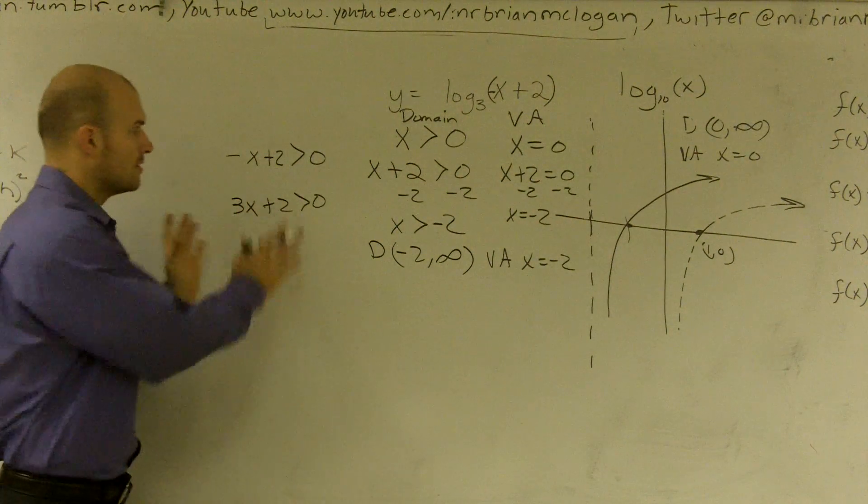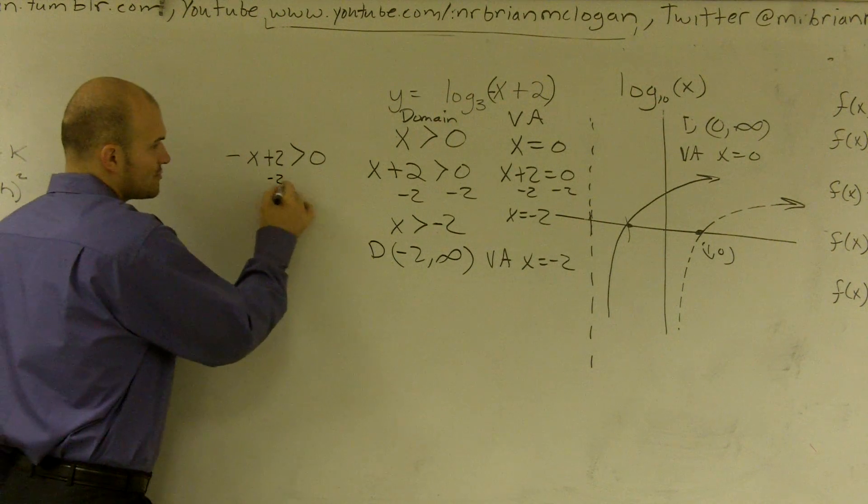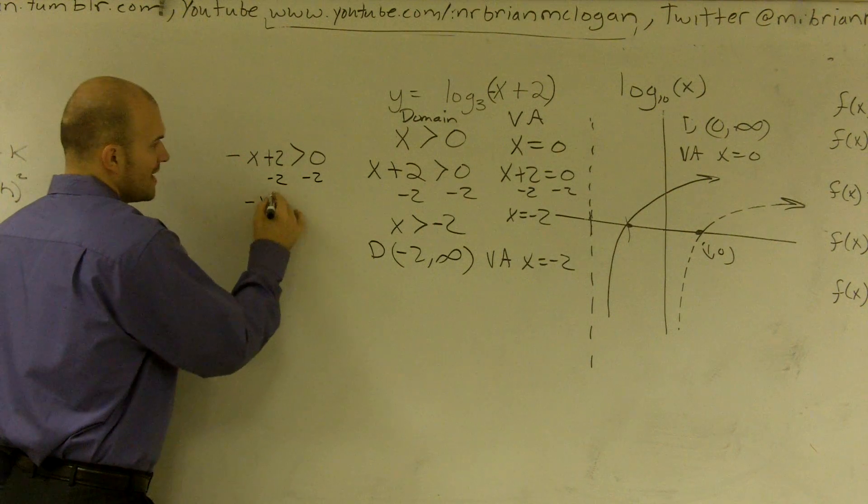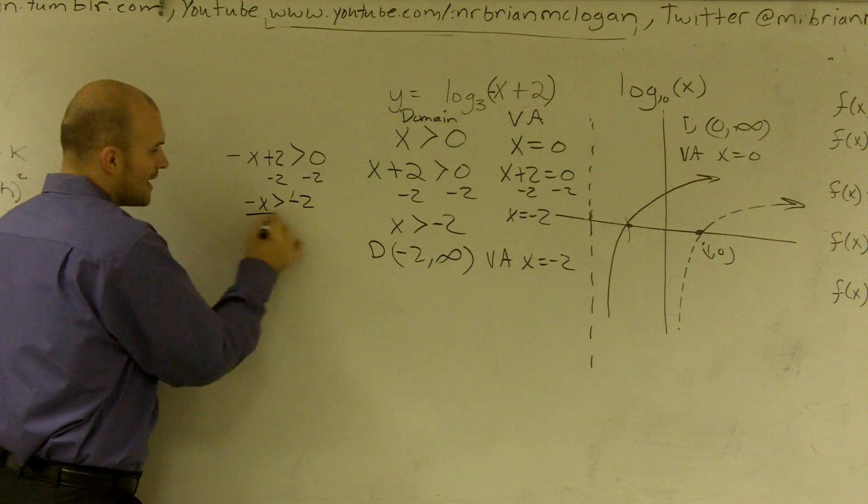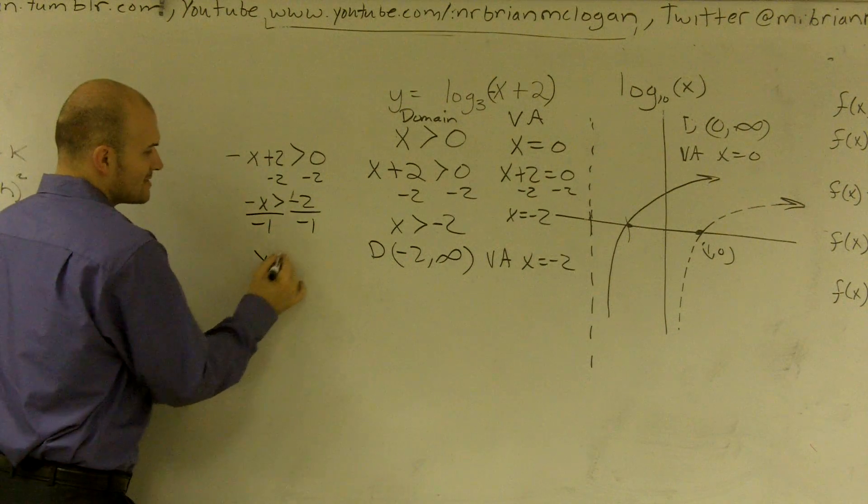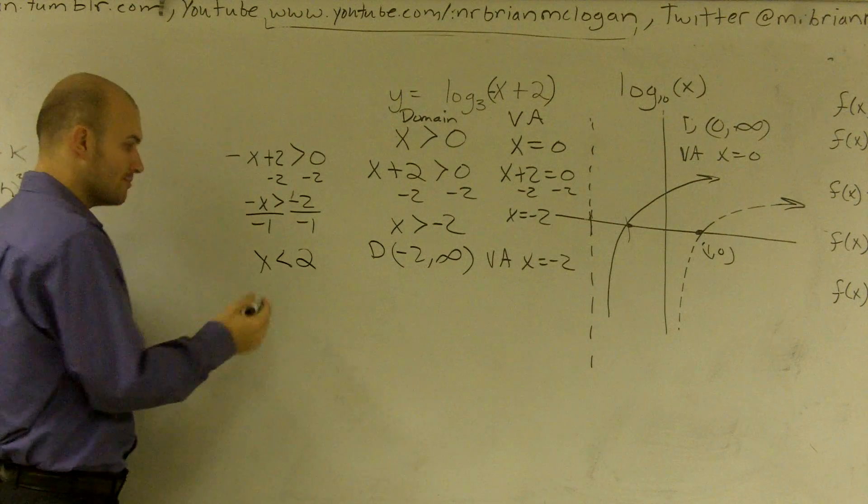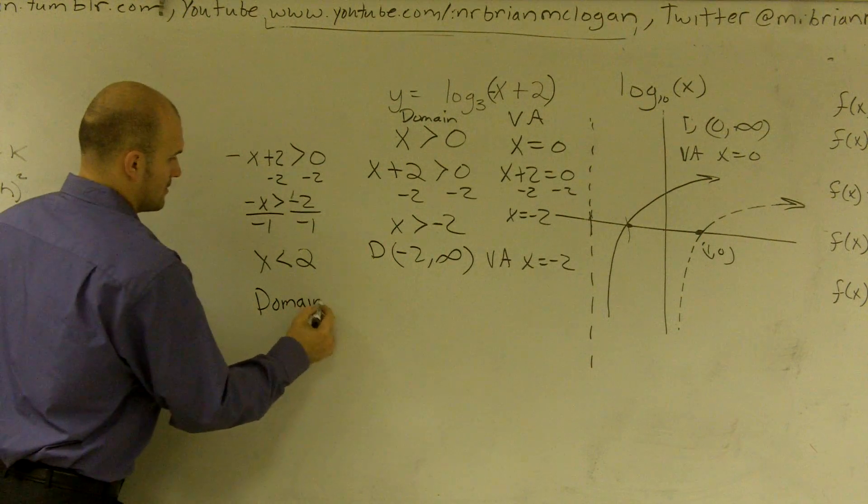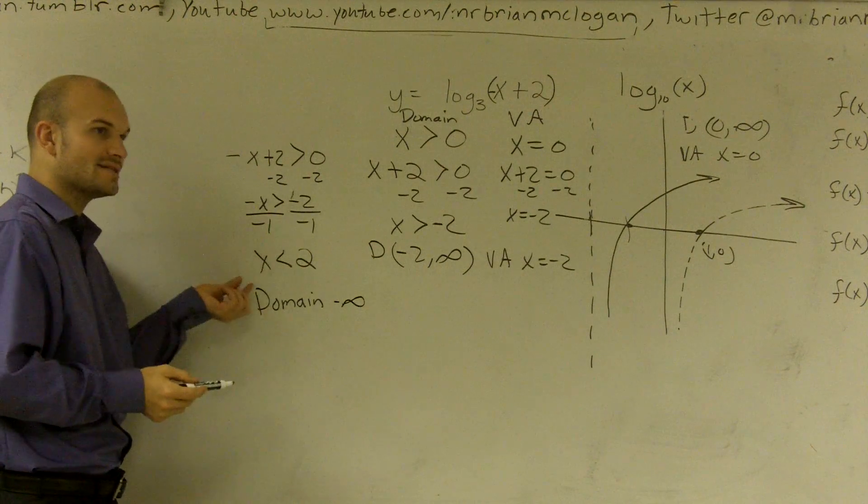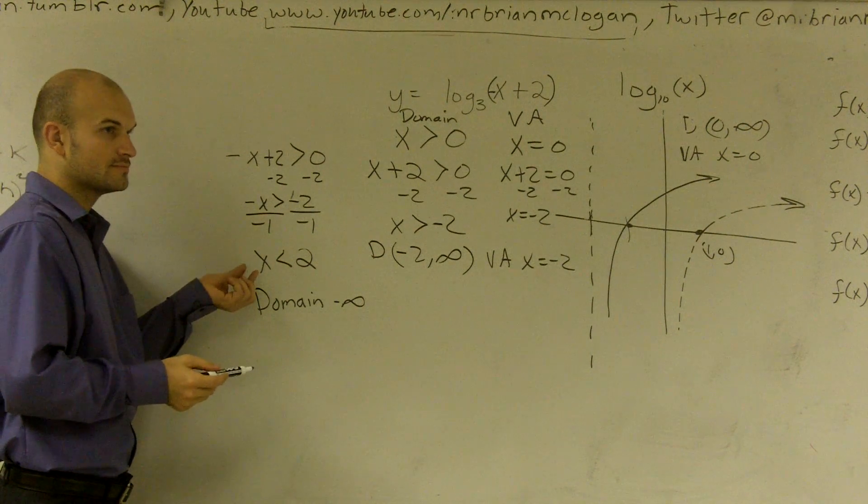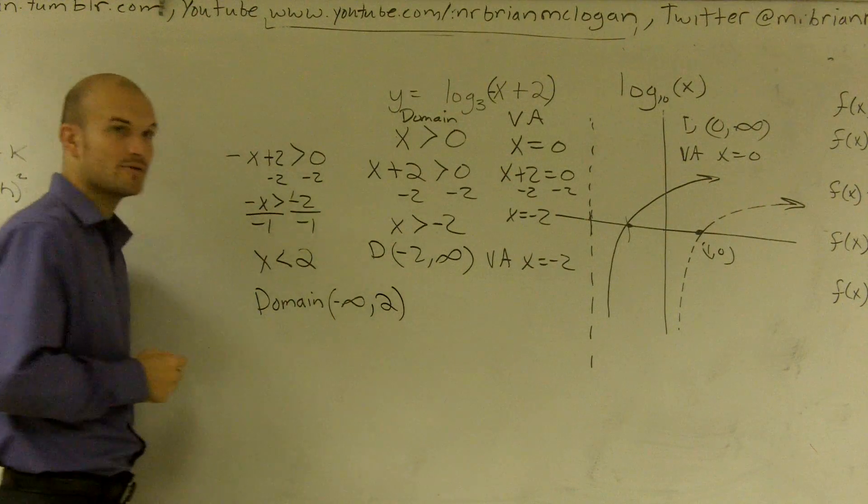How would you write it though? Okay, well I have this, right? Then you have to solve for x. So here I would subtract 2. I get negative x is greater than negative 2. I divide by negative 1. x is now less than 2. Right? So my domain would be from negative infinity, because it's all values less than, less than 2, all the way up to 2. So that would be my domain.